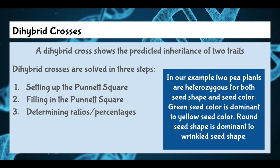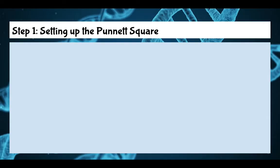On your note sheet you also see a space for you to write this exact example and the Punnett square that I show you here. For our example, we are going to use two pea plants that are heterozygous for seed shape and seed color. Green seed color is dominant to yellow, and round seed shape is dominant to wrinkled seed shape. We're going to use R for the seed shape and G for the seed color.